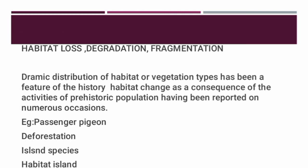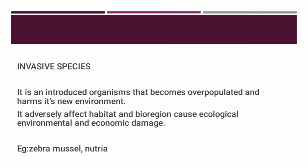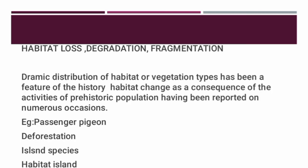The first threat is habitat loss, degradation, and fragmentation. Dramatic destruction of habitat or vegetation type has been a feature of human history, with habitat change as a consequence of prehistoric populations reported on numerous occasions. Deforestation in tropical areas is the greatest eliminator of species, followed by destruction and degradation of coral reefs, wetlands, plowing of grassland, and pollution of streams, lakes, and oceans. Globally, temperate biomes have been affected more by habitat loss than tropical biomes due to widespread economic development, but over the past 200 years such development is shifting to many tropical biomes.